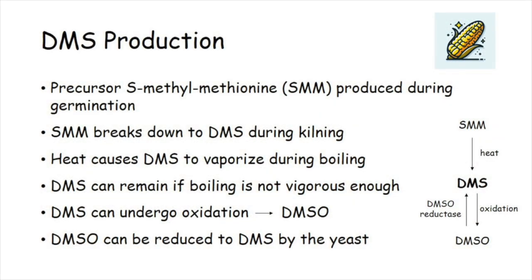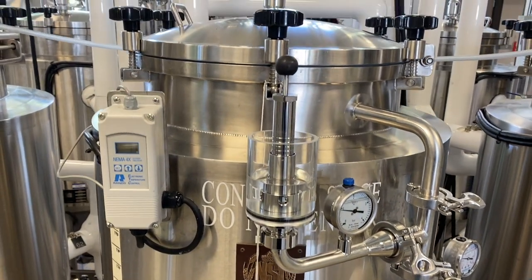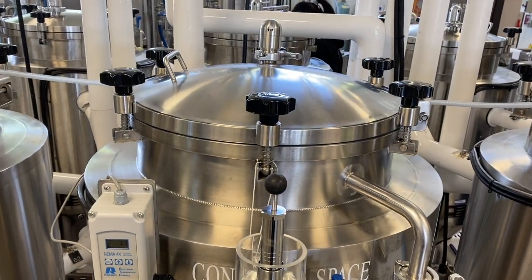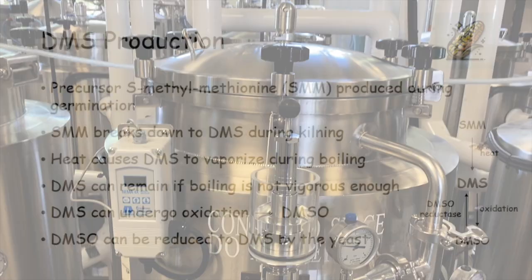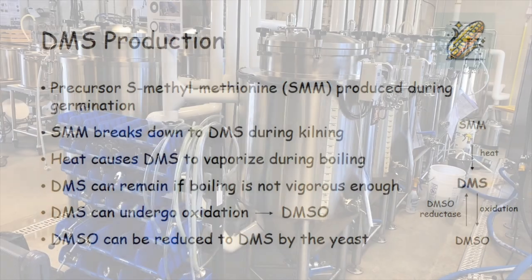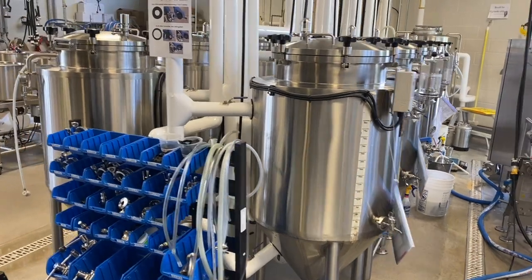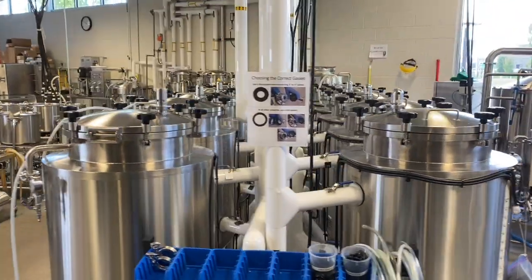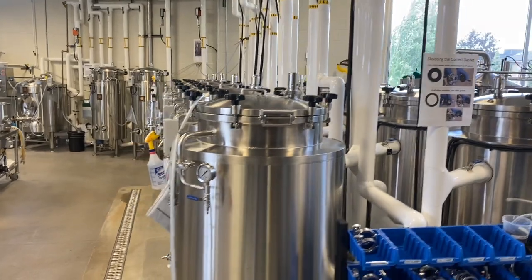As the wort cools down after boiling, DMS can undergo oxidation in the presence of oxygen, which can lead to the formation of DMSO. Fermenting wort contains SMM, DMS, and DMSO. During fermentation, DMSO can be reduced to DMS by the yeast enzyme DMSO reductase. DMSO can also be produced by some microbial contaminants such as wild yeast and wort spoilage bacteria.